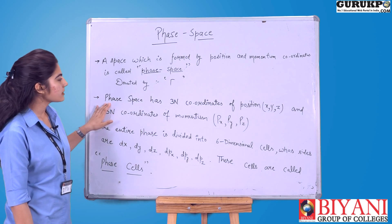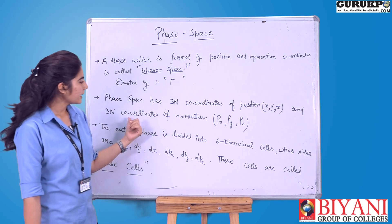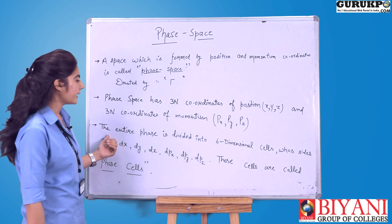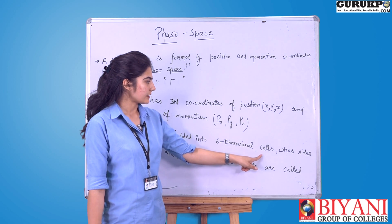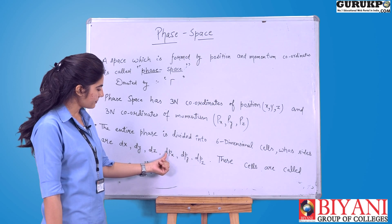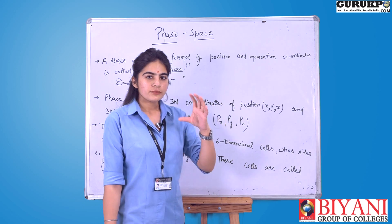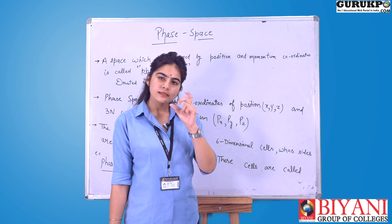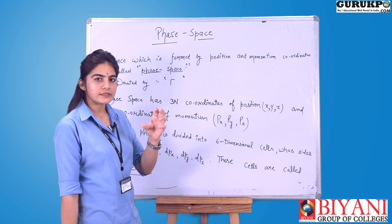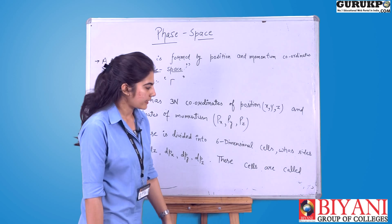Phase space has three N position coordinates — x, y, z — and three N momentum coordinates — px, py, and pz. The entire phase space is divided into six-dimensional cells whose sides are dx, dy, dz, dpx, dpy, and dpz. We divide the whole space into small coordinates, which is why we use dx, dy, dz instead of x, y, and z.